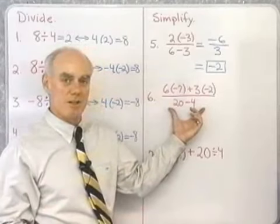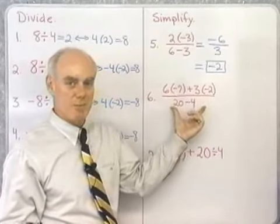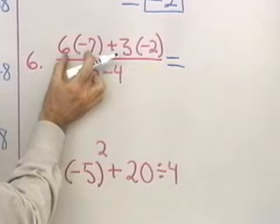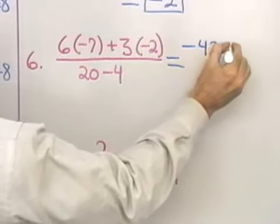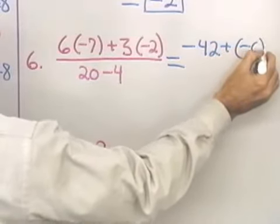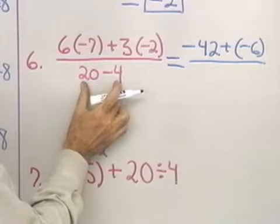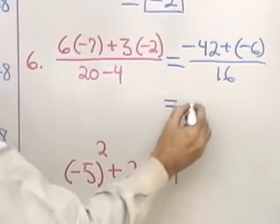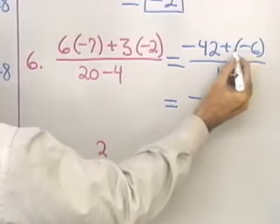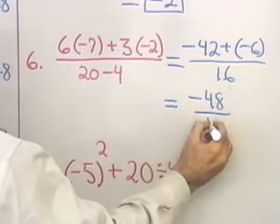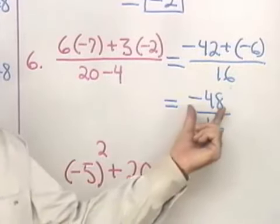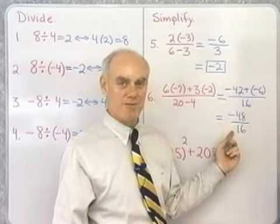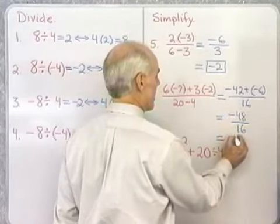The next problem is a little more complicated. I work on the numerator separately from the denominator. I have addition and multiplication, so I multiply first: negative 42 plus 3 times negative 2 is negative 6. All that is divided by 20 subtract 4, which is 16. Now negative 42 plus negative 6 is negative 48, because the two numbers have the same sign — I add absolute values and use the common sign. Negative 48 divided by 16: I divide absolute values to get 3, and the two numbers have different signs, so the answer is negative 3.